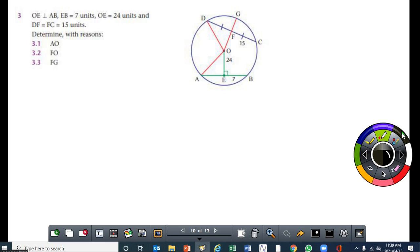The question says OE is perpendicular to AB and EB is 7 units, OE is 24 units, and DF equals FC and both are equal to 15 units. The question says determine the length of AO, which is the radius. To do that, I need to identify a triangle. In this case, triangle AOE, and in that triangle I know the length of OE and I can get the length of AE.